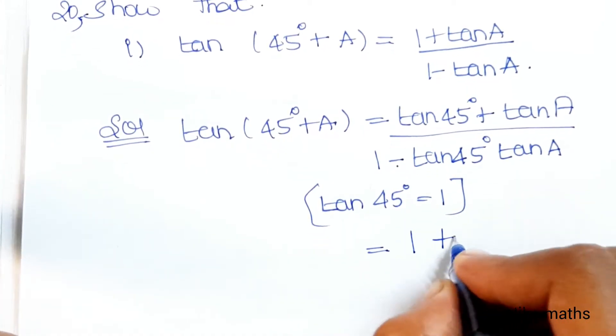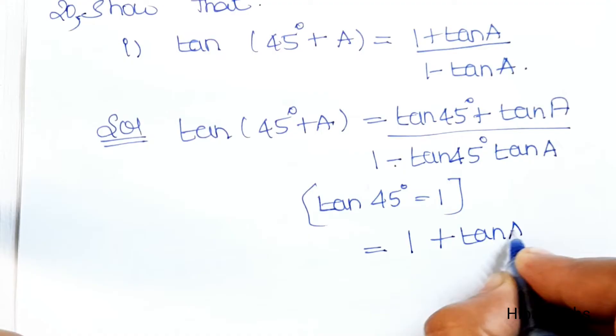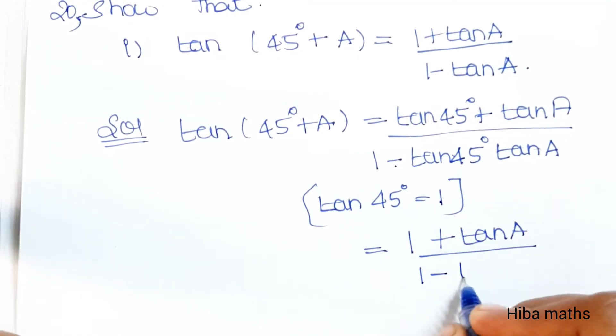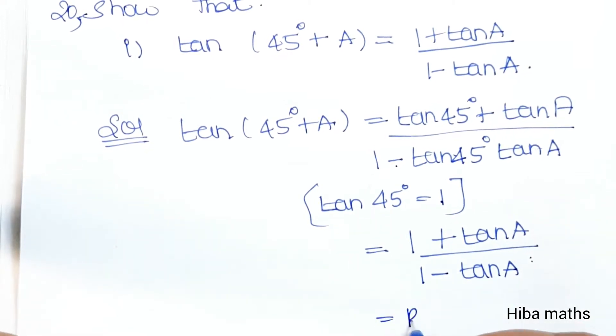tan45° is 1, so we get (1 + tanA) divided by (1 - 1·tanA), which equals (1 + tanA) divided by (1 - tanA). This is our RHS. It's easy to prove.